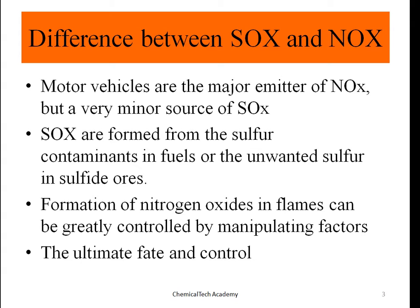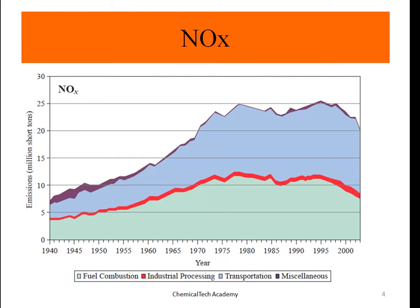The formation of nitrogen oxides in flames can be greatly controlled by manipulating various factors. This slide shows NOx production from 1940 to 2000. The y-axis shows emissions in millions of short tons, ranging from zero to 30, with categories including fuel combustion, industrial processing, transportation, and miscellaneous. The portion from transportation is getting bigger over time.